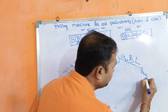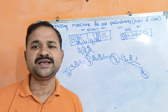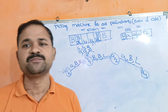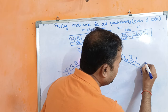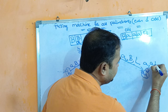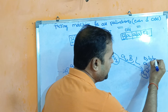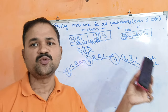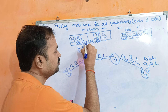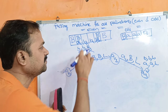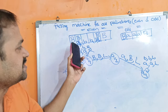Now we are at Q3 state. On Q3, if we read any number of A's and B's, don't change them but move the head one position to the left. For example, if we read B on Q3, don't change B but move the head one position to the left, continuing until we reach the blank symbol.